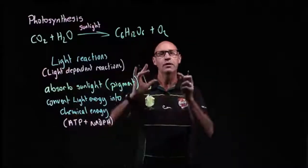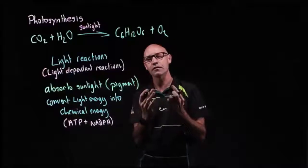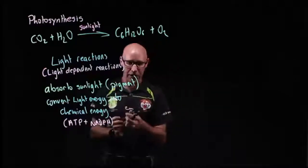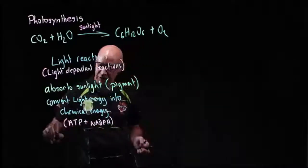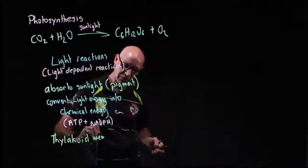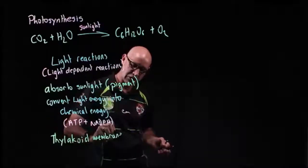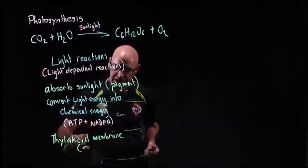The light reactions occur where the pigment is, where the chlorophyll is, and that is on the thylakoid membrane. So this occurs on the thylakoid membrane, in other words, it occurs on the grana.